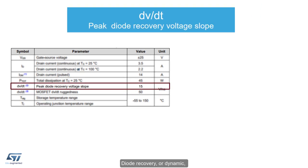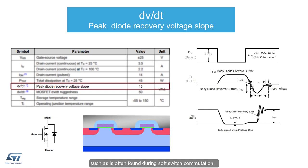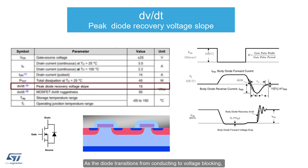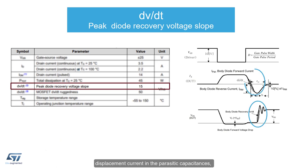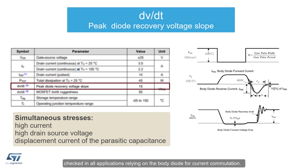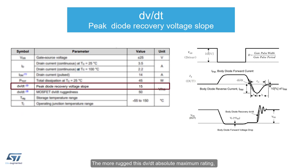Diode recovery, or dynamic dV/dt, is related to putting a voltage across the MOSFET while its body diode is conducting a current, such as is often found during soft-switch commutation. There is an intrinsic body diode, which is an artifact of the parasitic bipolar transistor just discussed. During current conduction through this diode, a high charge concentration is built up that must be removed for the diode to turn off and regain the voltage-blocking ability of the MOSFET. As the diode transitions from conducting to voltage-blocking, a dV/dt occurs that causes displacement current in the parasitic capacitances, a peak recovery current, and simultaneous increase in voltage across the device. These combined stresses can result in failure. The diode recovery dV/dt should be explicitly checked in all applications relying on the body diode for current commutation. The more rugged this dV/dt absolute maximum rating, the more suited the MOSFET is for applications such as resonant or zero-voltage switched bridge topologies.